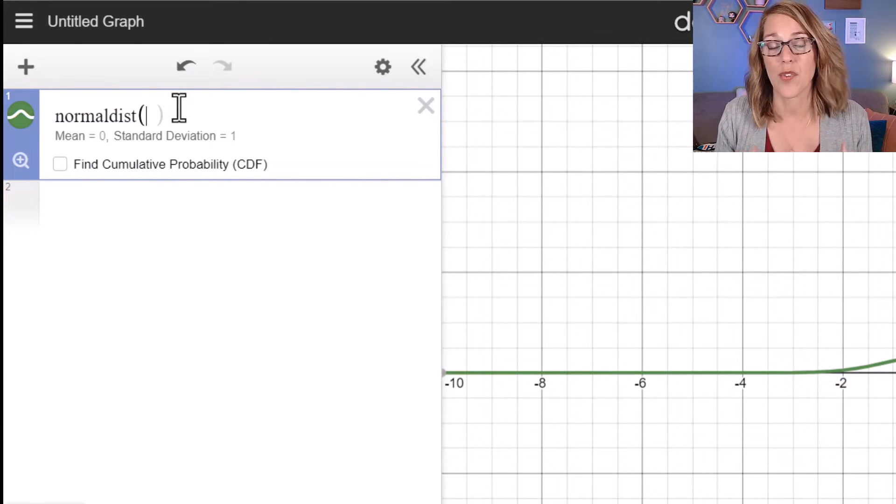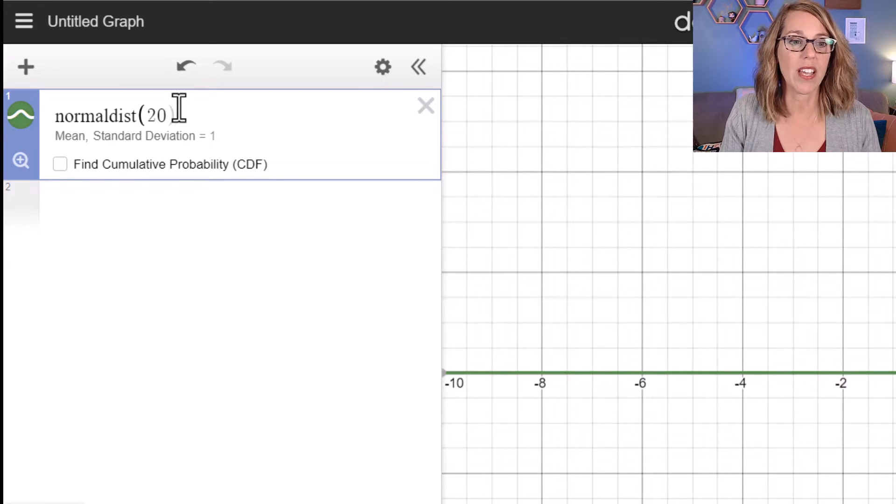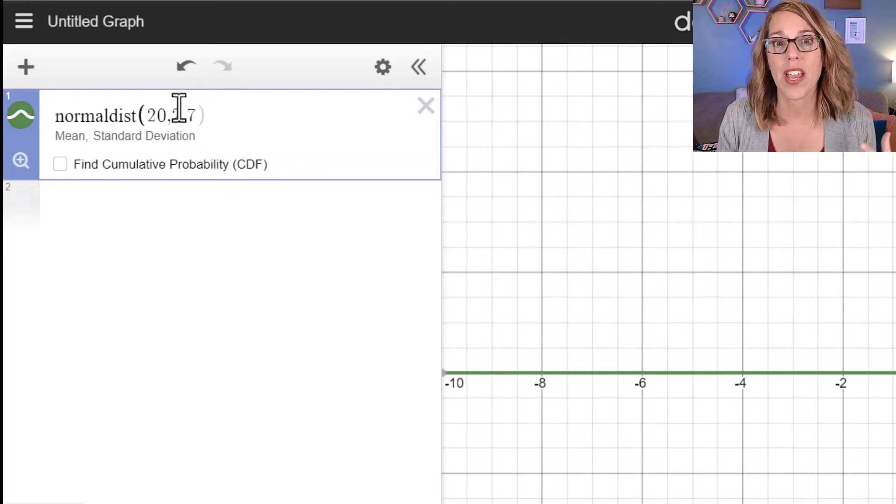Now it gives me the standard normal distribution with a mean of zero and a standard deviation of one. If you wanted to change this to a different mean, say that your mean was 20 and your standard deviation was 2.7, you can go ahead and type those values in as well.